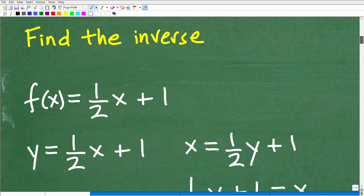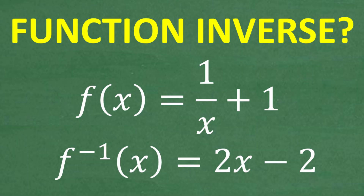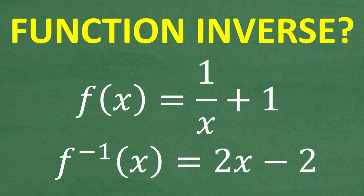One way we could do this is take this function from the problem and just go ahead and find the inverse. We're like, let's just find the inverse and compare it to our actual problem. Here's the function — let's find the inverse, and if we get this as our final answer, that's a pretty good indication that this function is the inverse of our original function.